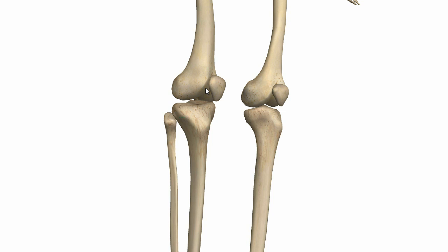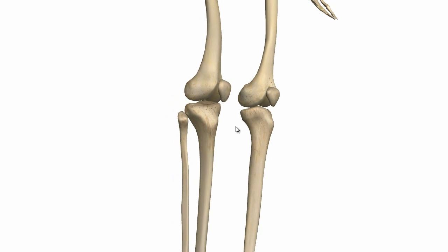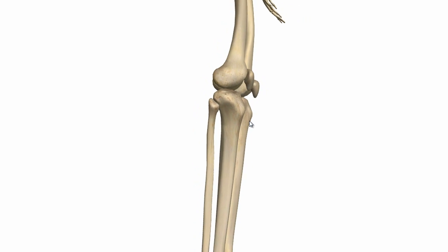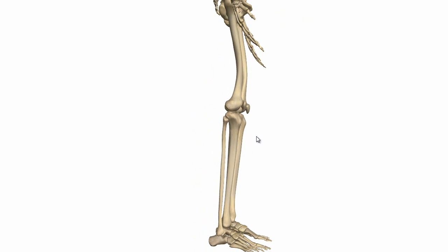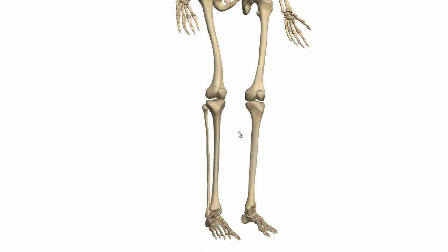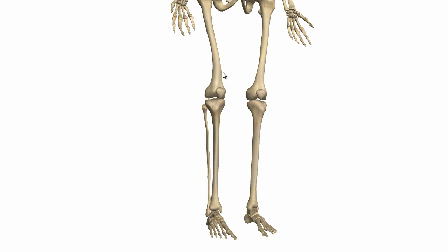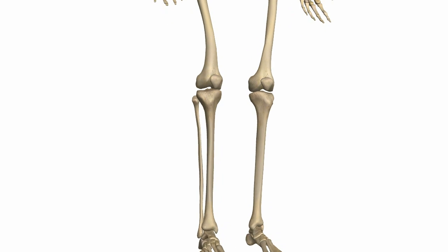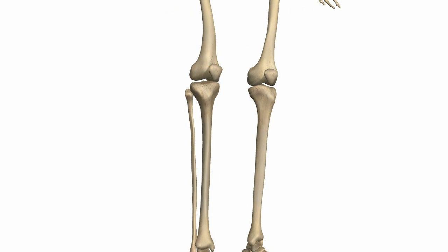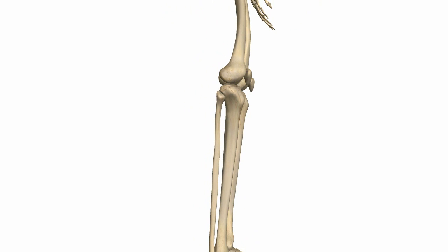It's a hinge joint and the main movements you get at this joint are flexion and extension. Looking at the model here, this is in the fully extended position. Flexion is back this way and extension is up this way.